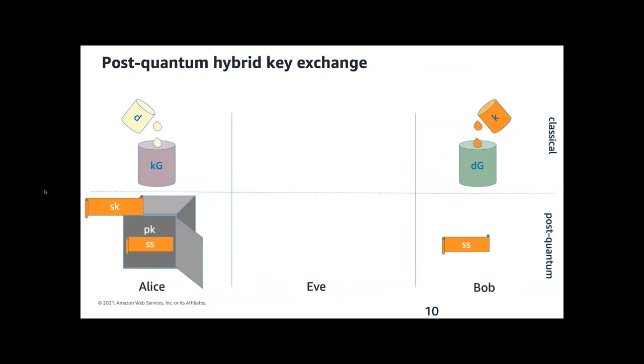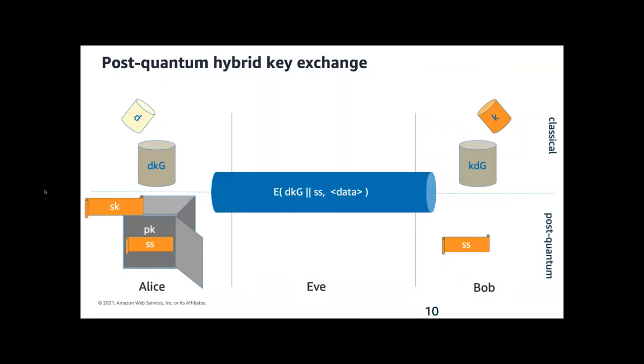Alice can decapsulate that shared secret using her secret key to get the same shared secret, and Bob and Alice both add their secret color to the exchange cans of paint to derive a new secret color DKG. Then they just concatenate those two secrets or really mix them together using a key derivation function to encrypt the communication channel.